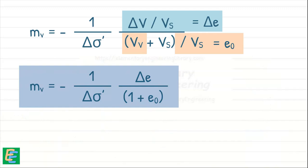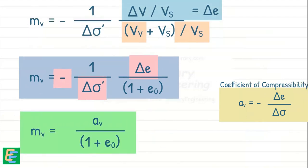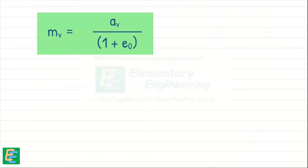Further, if we remember, this quantity is coefficient of compressibility of soil. So we can write, this gives us a relationship between AV and MV, coefficient of compressibility and coefficient of volume compressibility.